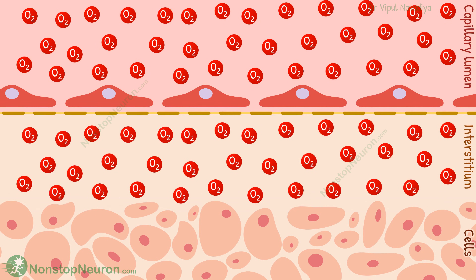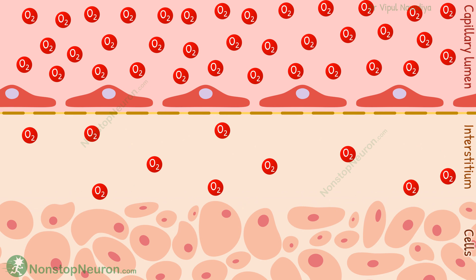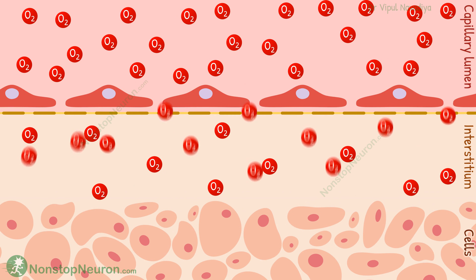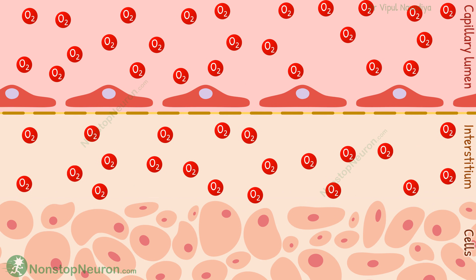So what happens is, the cells in our body use nutrients, like glucose and oxygen, for their functions. So the concentration of nutrients is less in their surrounding interstitium. On the other hand, the capillary fluid has a normal level of these nutrients. So during fluid mixing, there is a net movement of nutrients from the capillary to the interstitium.